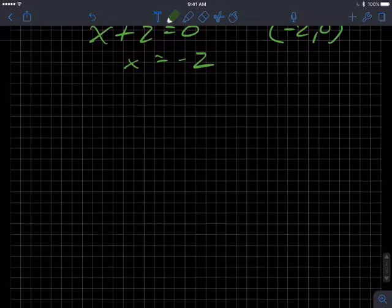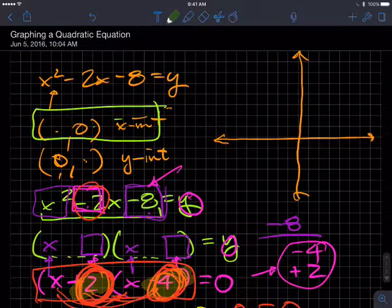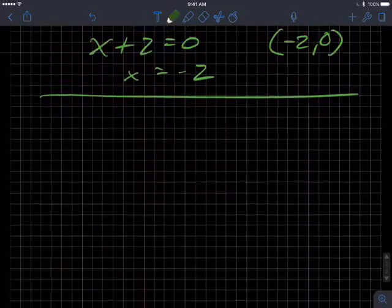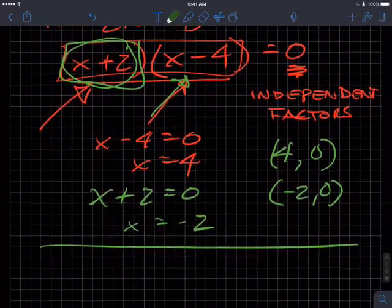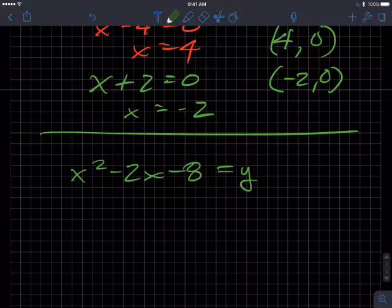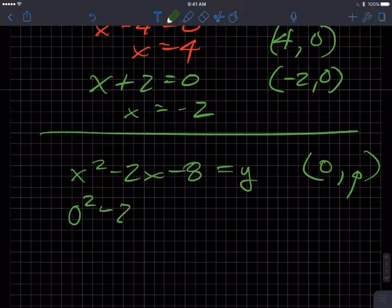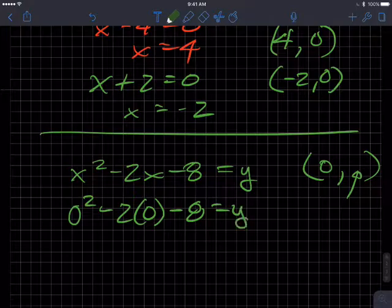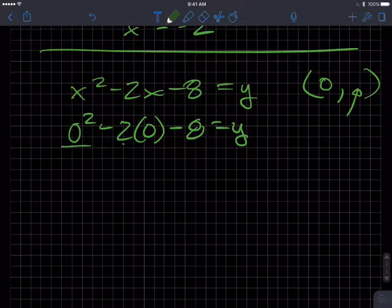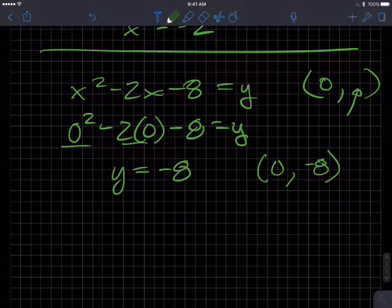We're going to plot those in a second. Then we have the other situation where we want the y-intercepts where x is equal to 0. And that one's quite a bit easier. What was our equation again? x squared minus 2x minus 8 equals y. This time I'm putting 0 in for x to figure out what this y is that maps to it. 0 squared minus 2 times 0 minus 8 equals y. So these two terms equal 0 and I get y equals negative 8. So our y-intercept is 0, negative 8.